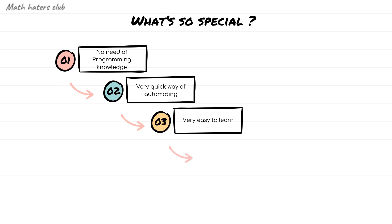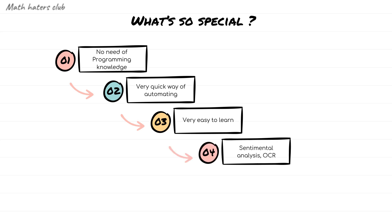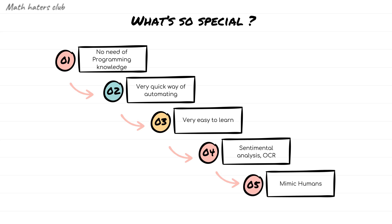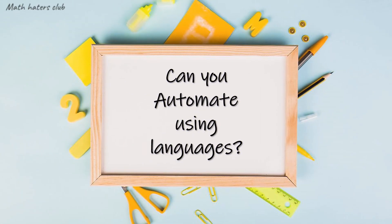We can use machine learning tools in RPA. For example, OCR — Optical Character Recognition — which converts a photo into editable text. We can also use Sentiment Analysis to check expressions and words. RPA can mimic a person and even learn a language.